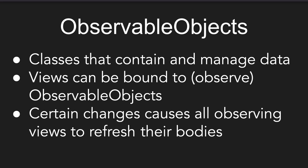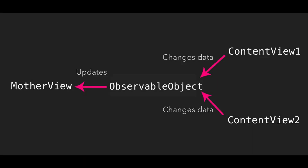So how can we make use of this? We can create an observable object class that contains a variable indicating the current page that should be displayed. Then we can bind our MotherView, ContentView Alpha, and ContentView Beta to it. We can tell the MotherView to show the corresponding content view depending on the page variable. Using the buttons inside the content views, we can update that variable, which causes all three observing views to update their bodies including the MotherView, eventually showing the correct content view.